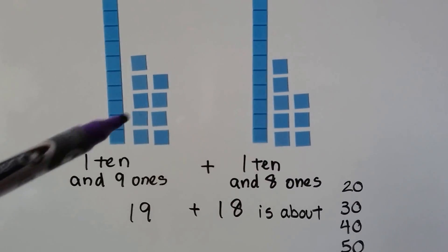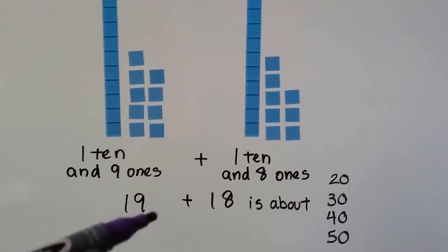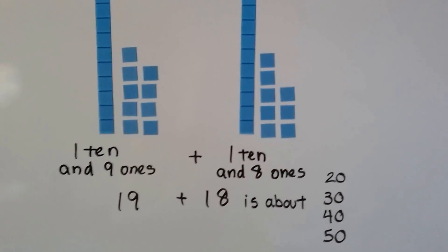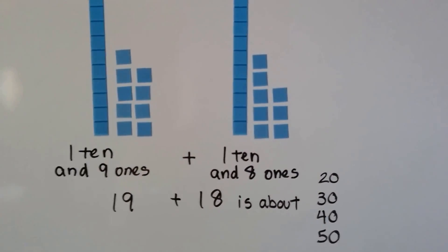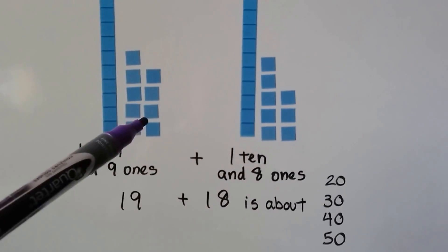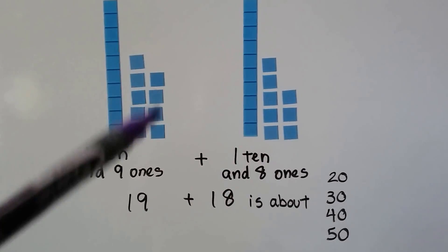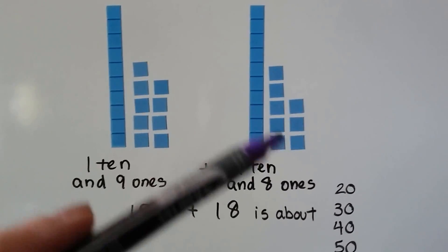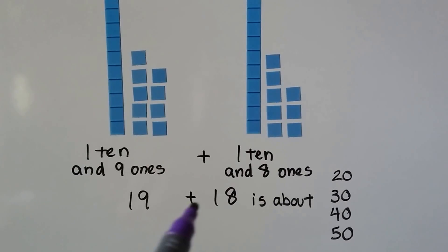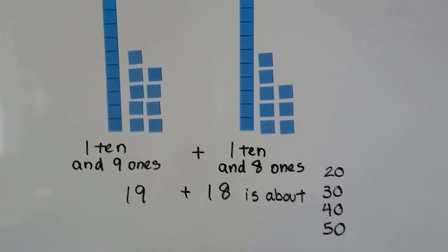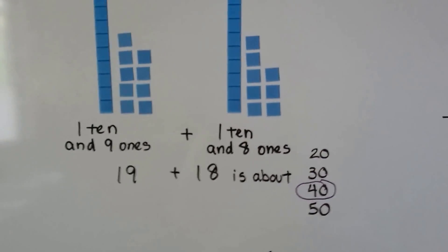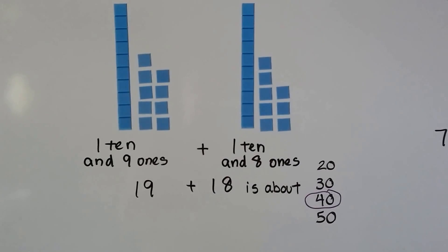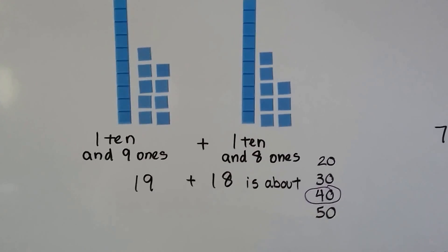Let's try that again. Now we have one ten and nine ones — that's nineteen. And we want to add it to one ten and eight ones — that's eighteen. We know we've got two longs of ten. But look at the ones place — does that look like it's almost ten? Yes, it does. So we have two tens, and we can say this is almost three tens. And that's almost another ten — that's almost four tens. So we can say nineteen plus eighteen is about four tens. It's about forty, because we can almost make two more tens out of this.